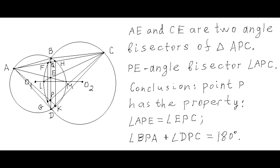Point P has the property we need to prove for point X: the sum of angles BPA and DPC equals 180 degrees. This is because E is the intersection of two angle bisectors of triangle APC, from which it follows that segment PE is also an angle bisector of that triangle. So angles APE and EPC are equal, from which the sum of angles BPA and DPC equals 180 degrees follows.